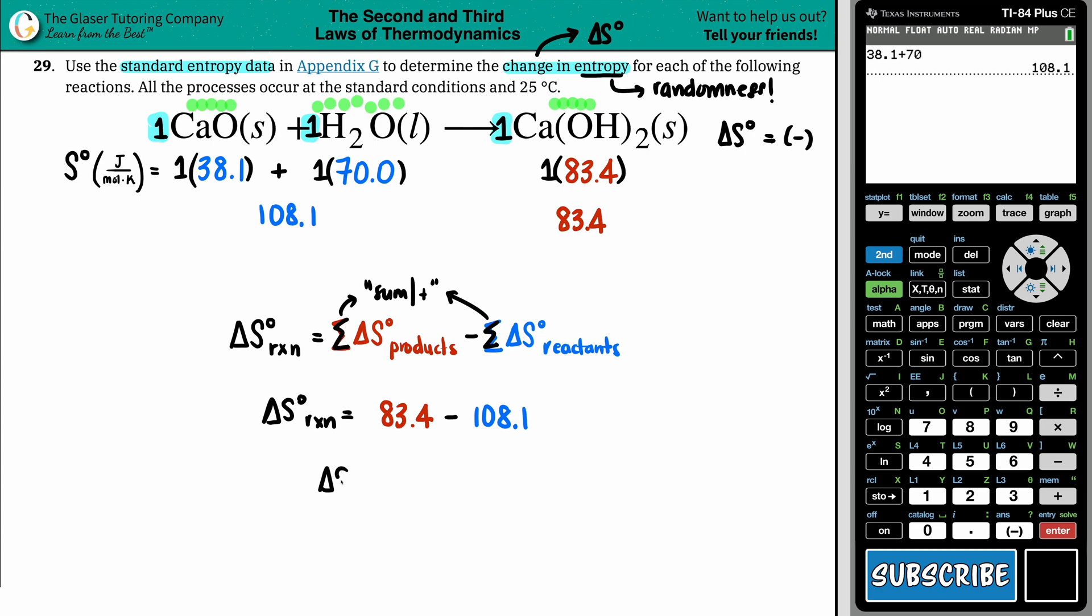Okay. Calculator time. Let's go for it. 83.4 minus that answer. Looks good to me. Negative 24.7.